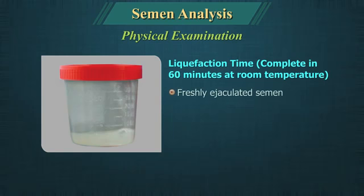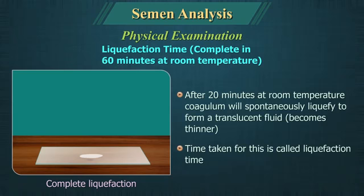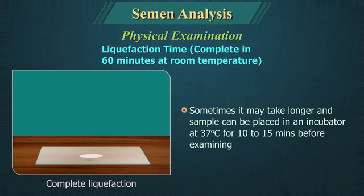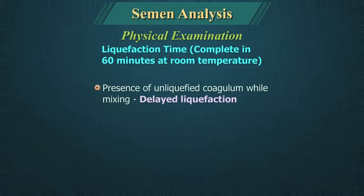Liquefaction Time: Freshly ejaculated semen is highly viscid, opaque, white or grey. After about 20 minutes at room temperature, the coagulum will spontaneously liquefy to form a translucent, thinner fluid. The time taken for this is called liquefaction time. Sometimes it may take longer, and the sample can be placed in an incubator at 37 degrees centigrade for 10 to 15 minutes before examining again. Failure to liquefy or delayed liquefaction may indicate inadequate prostatic secretion. Presence of an unliquefied coagulum while mixing indicates delayed liquefaction.